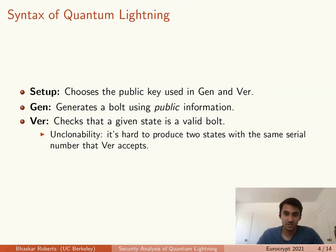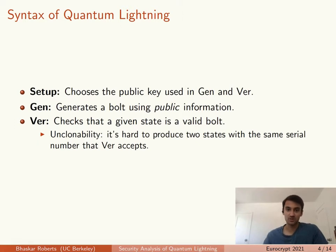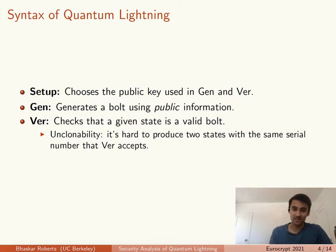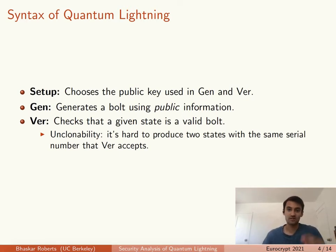Quantum lightning has three functions: setup, gen, and var. Setup just samples the parameters that are used throughout the scheme. Gen is the generation function which produces the bolts, and it's sometimes called the storm by analogy to a lightning storm. As with a lightning storm, there's some randomness involved in running gen that's hard to replicate. In our case, it will be the act of measuring a state. When we measure a state, it collapses to some random value, and every time we run gen and make this measurement, we measure a different random value. This is how we ensure that successive runs of gen never produce the same exact lightning bolt.